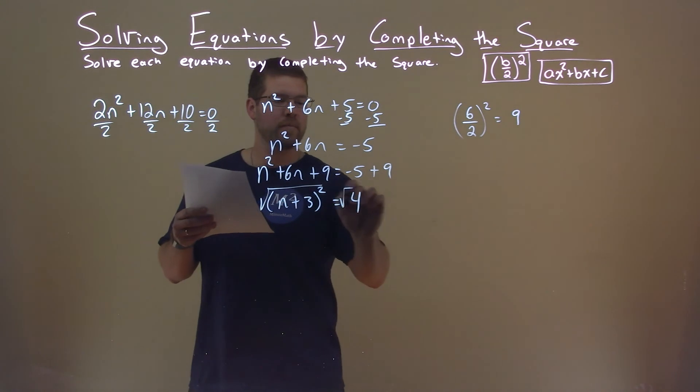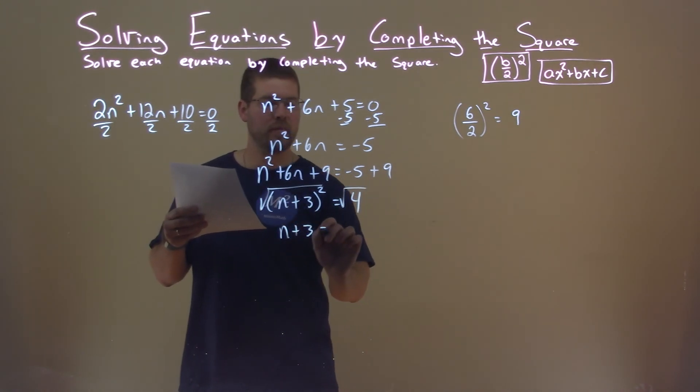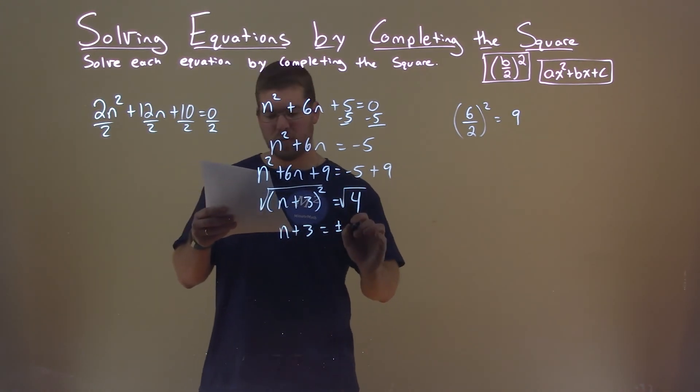Take the square root of both sides here. And we have n plus 3 equals plus or minus square root of 4, which is 2.